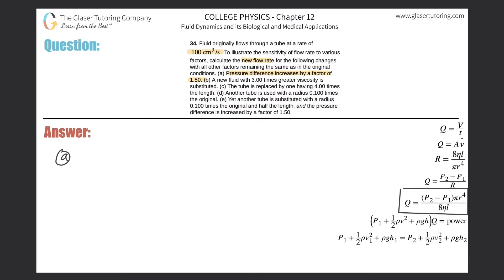We can reorganize this formula to create a nice linear formula. Instead of having a fraction, let's bring all the elements out of the denominator and up into the numerator. So we would have Q times 8 times the viscosity times the length, which will equal delta P times pi multiplied by R to the fourth.